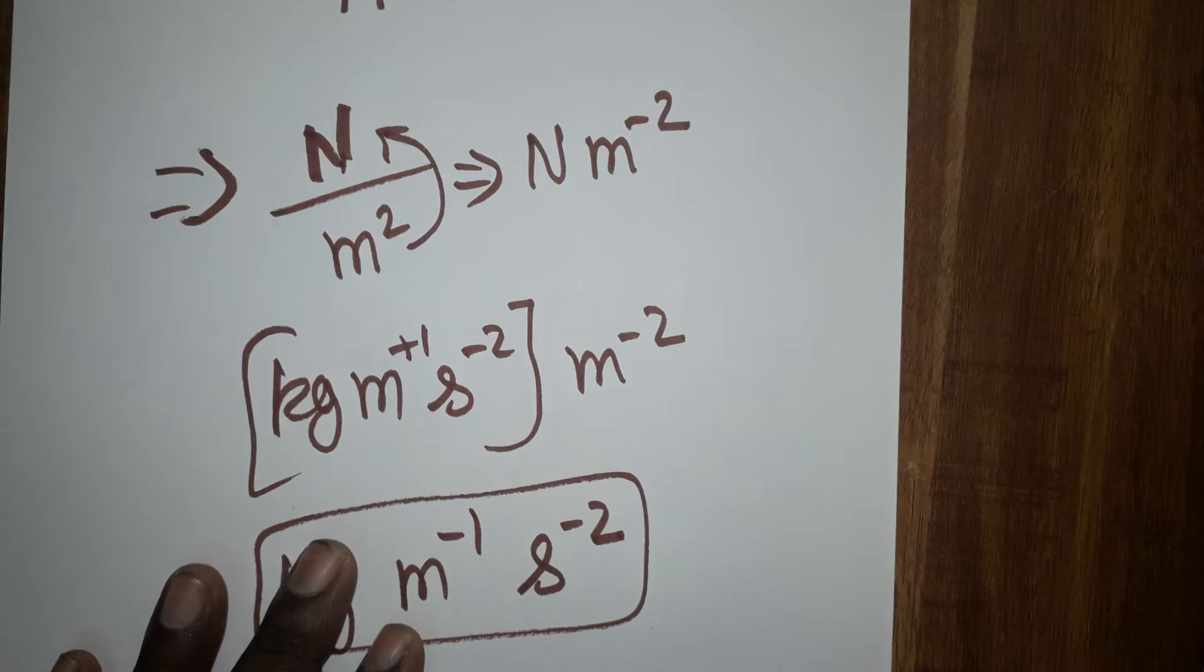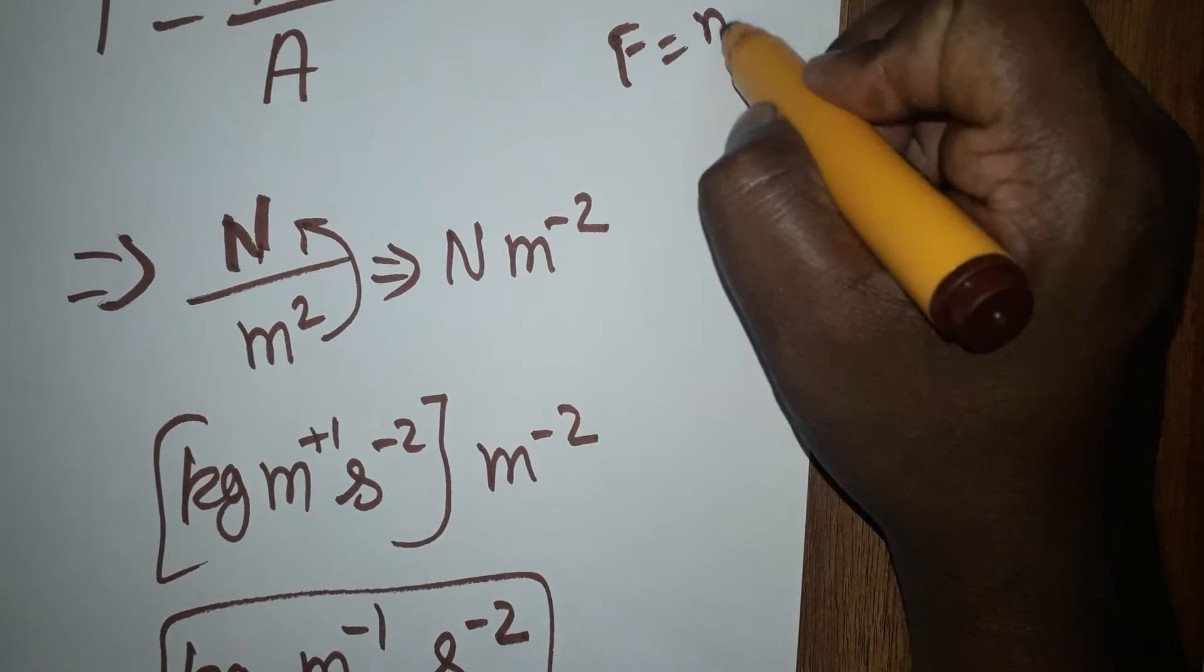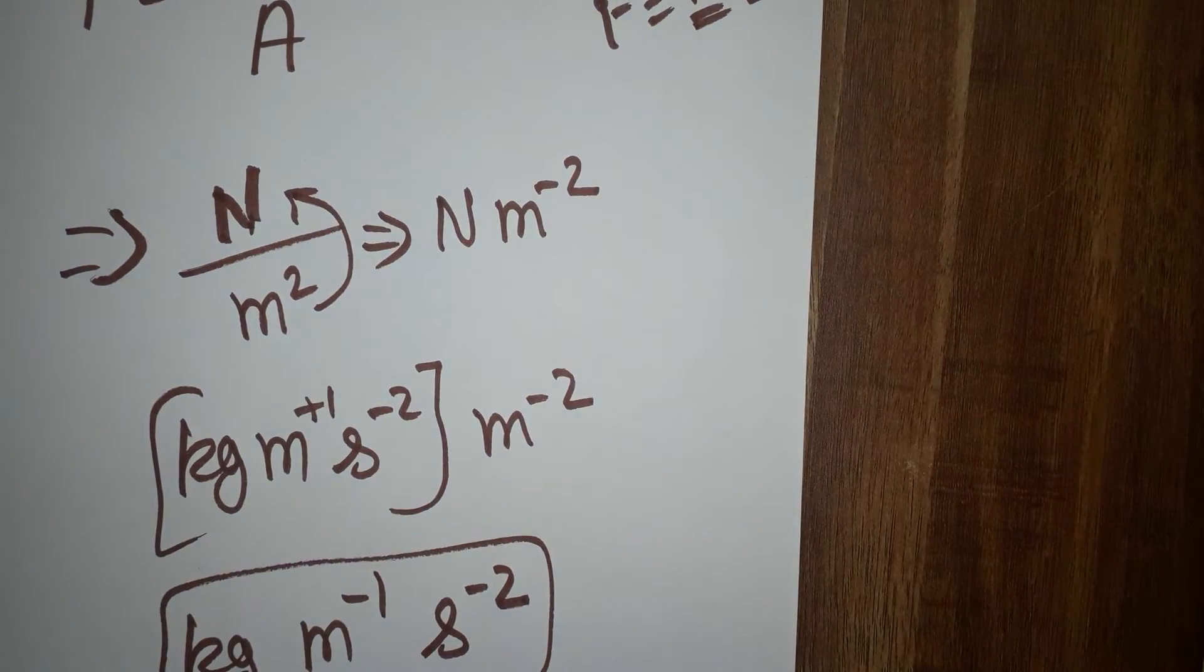What is Newton? Newton is equal to force unit. Also, force is equal to mass into acceleration. Mass is kg, acceleration is meter per second square.